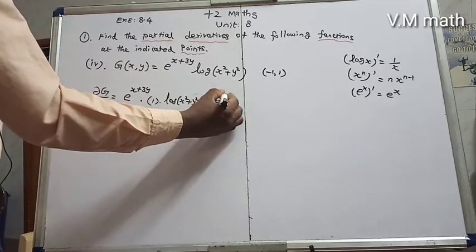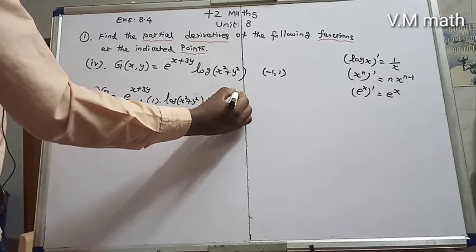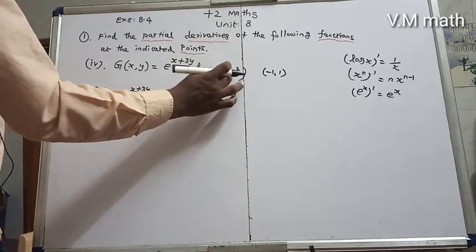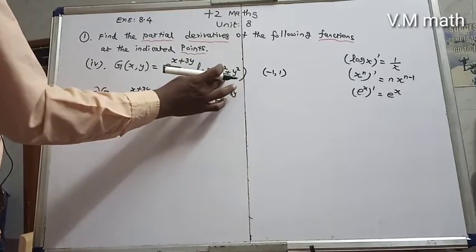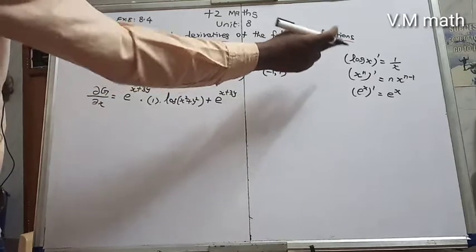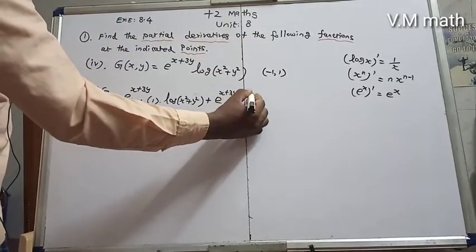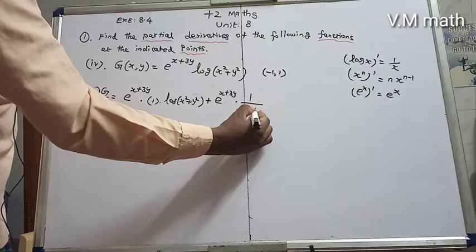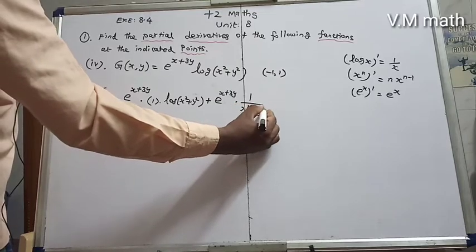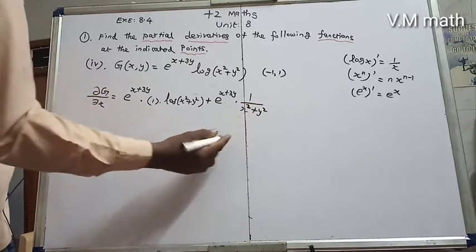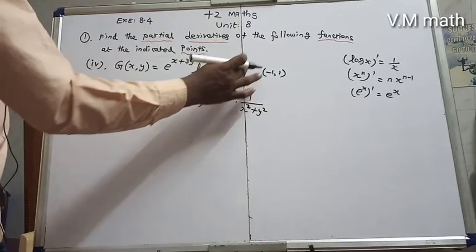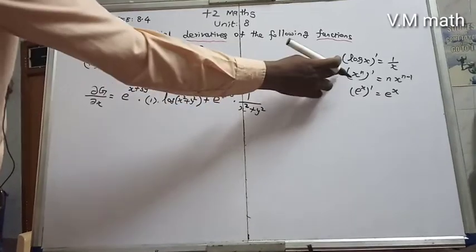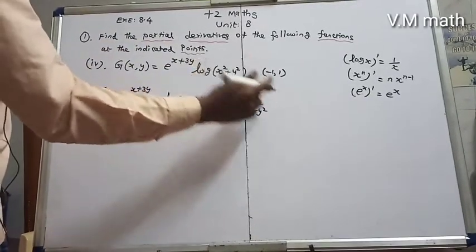Now for the second part of the product rule: e^(x+3y) multiplied by the differentiation of log(x² + y²). Using the formula, the derivative is 1 divided by (x² + y²), multiplied by 2x, using the x^n power formula with the constant.